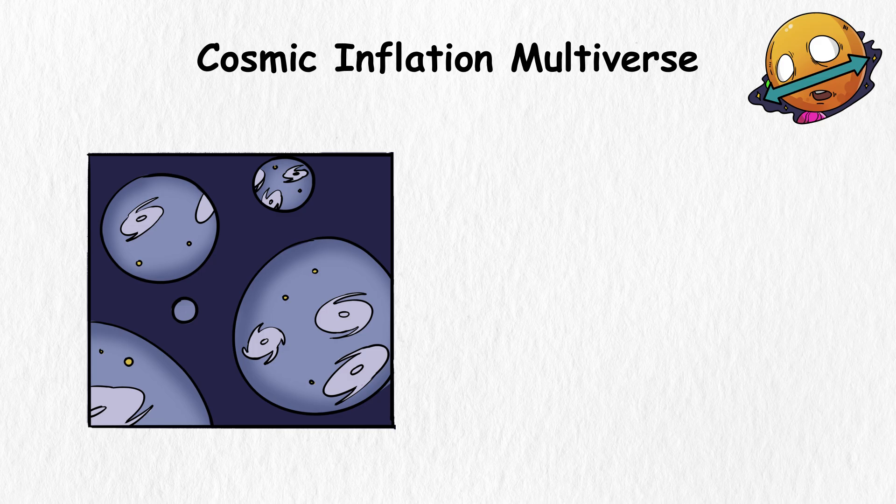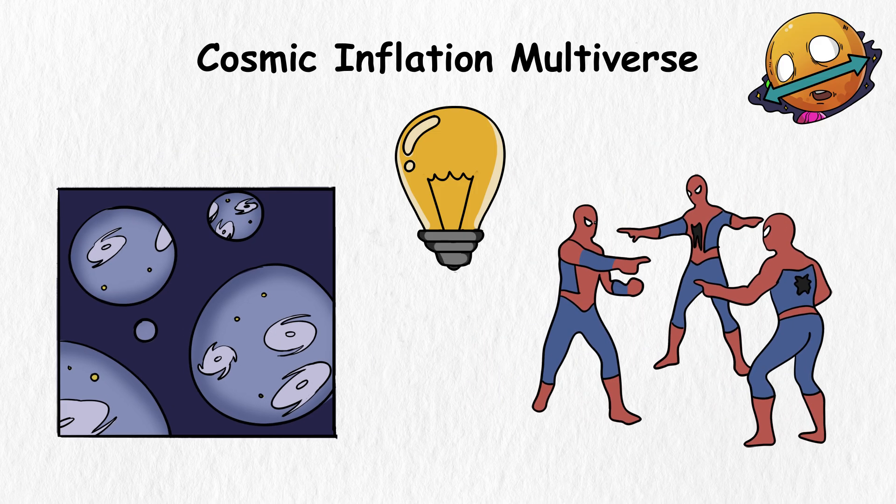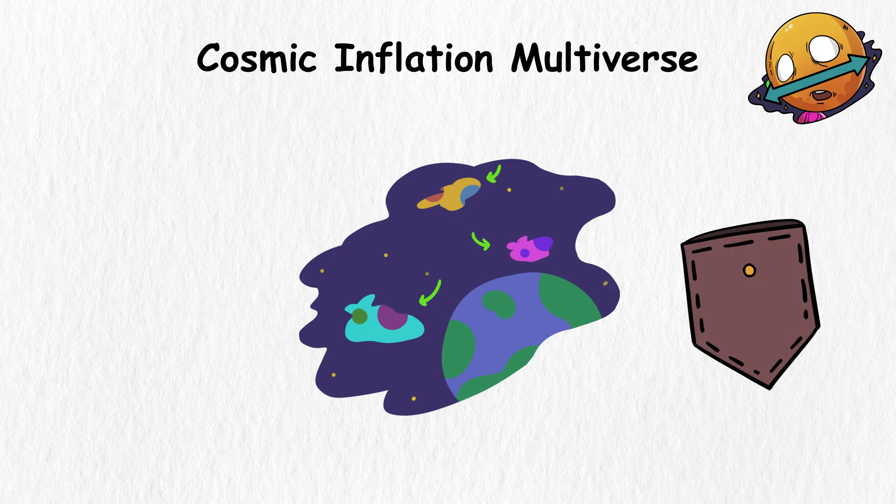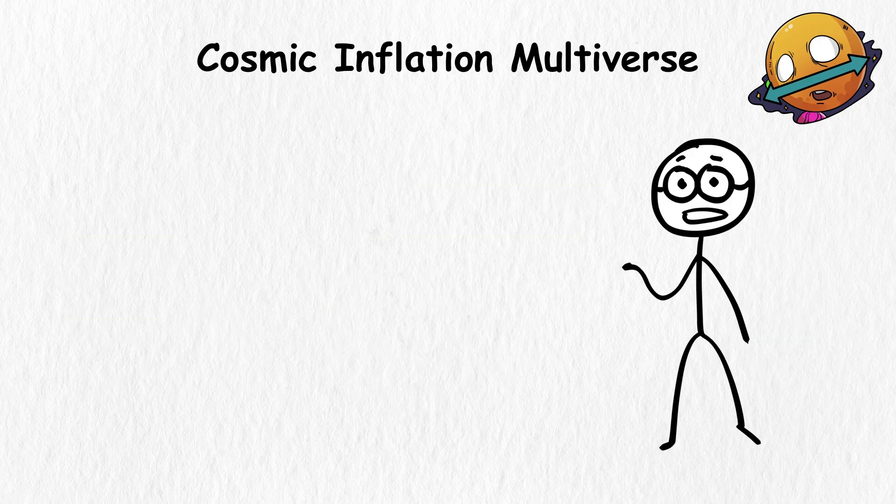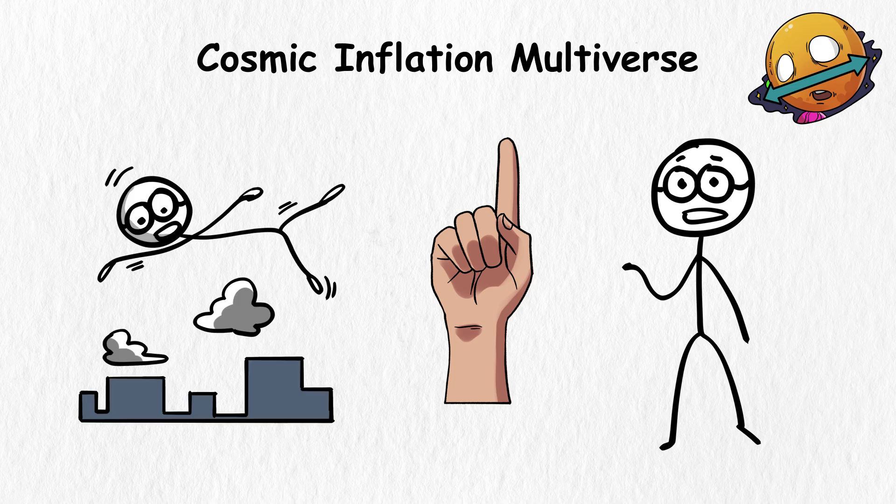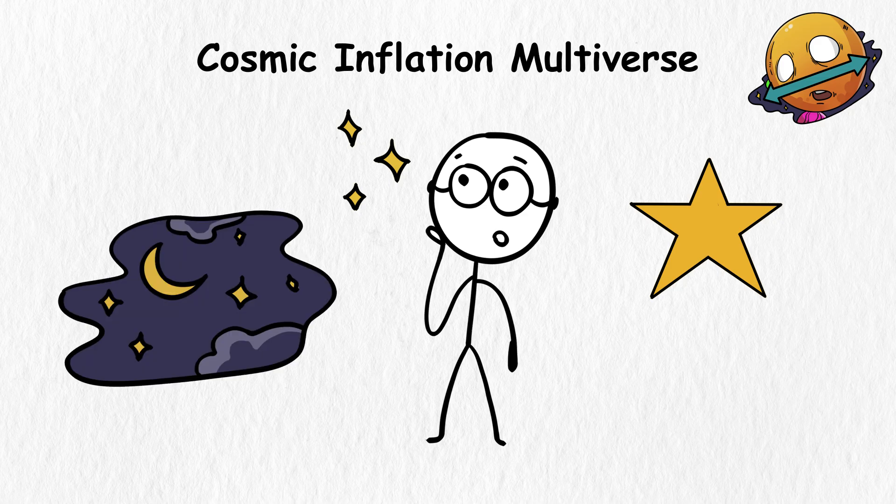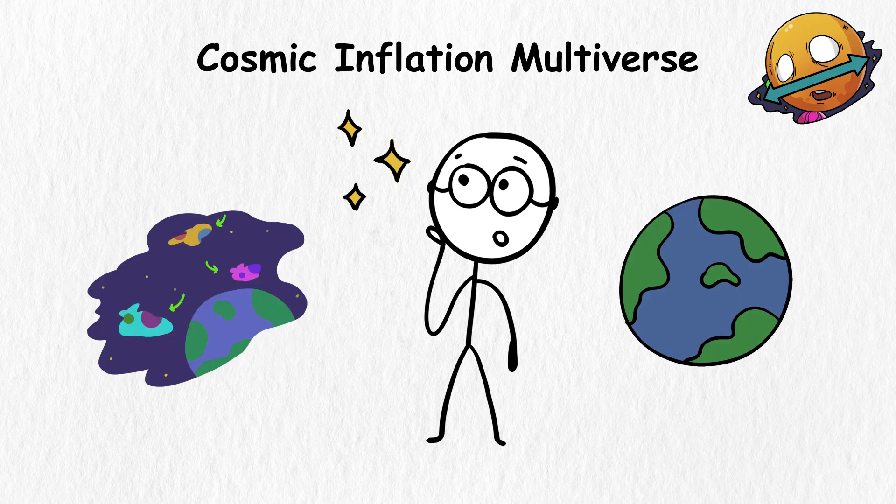Put all that together, and you get the multiverse. The idea here is that these universes exist in our universe, but in pocket dimensions, or realities, that may have their own set of laws. It could be possible that one dimension doesn't have gravity at all, while another one doesn't support any kind of life.